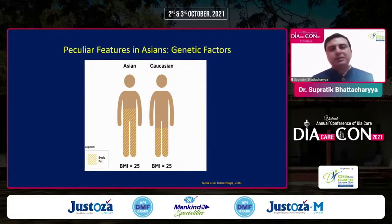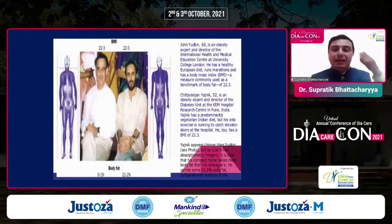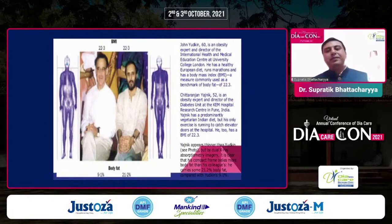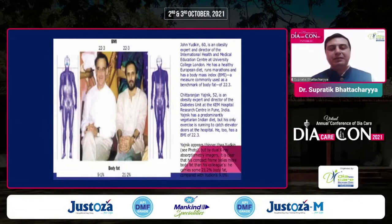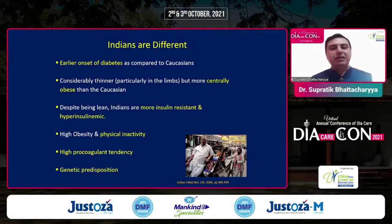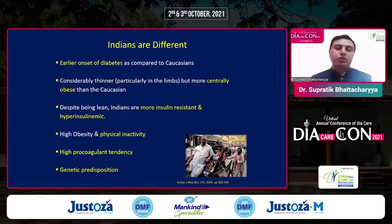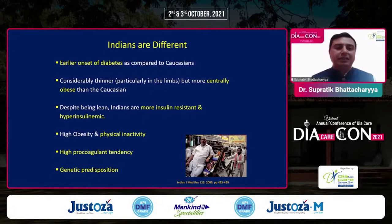This was exemplified in a diagram by one of our leading scientists from India — in spite of very similar BMI, the fat distribution is very different. Central obesity is more in the Indian phenotype. Key features include early onset of diabetes in Indians compared to Caucasians, more central obesity, more insulin resistance, and hyperinsulinemia. Also, there is less physical activity and a genetic predisposition.